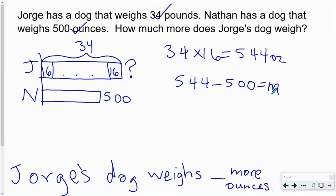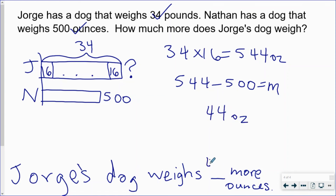You can pick any letter you'd like as long as it makes sense to you. You can also do this math any way you'd like. 544 minus 500 equals 44 ounces. Jorge's dog weighs 44 more ounces.